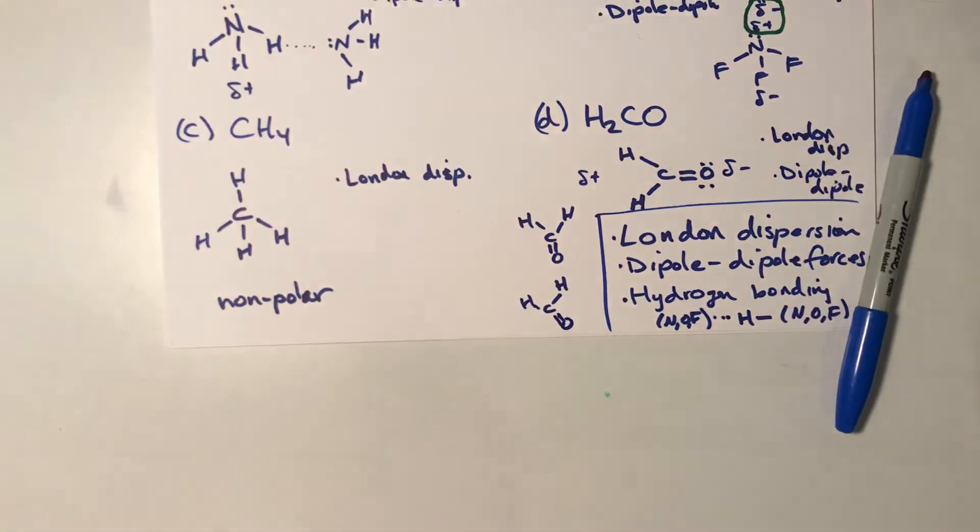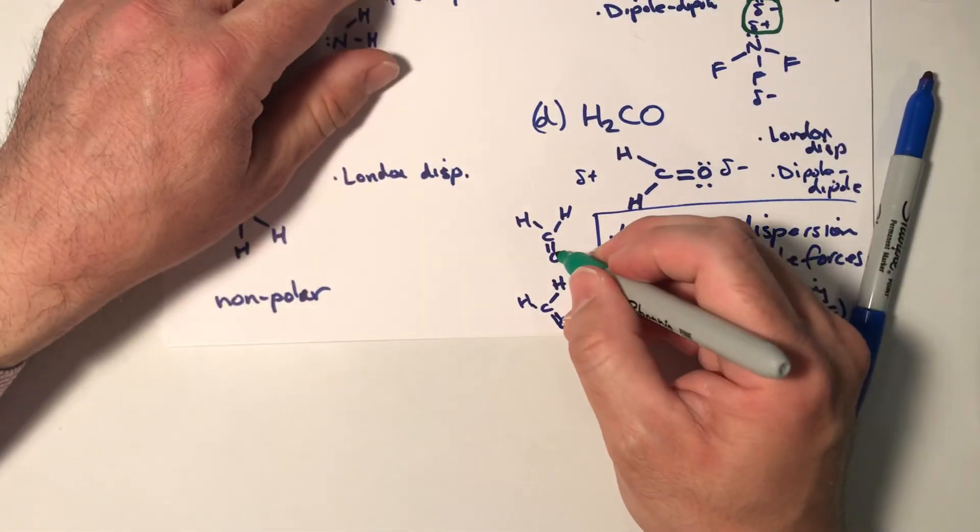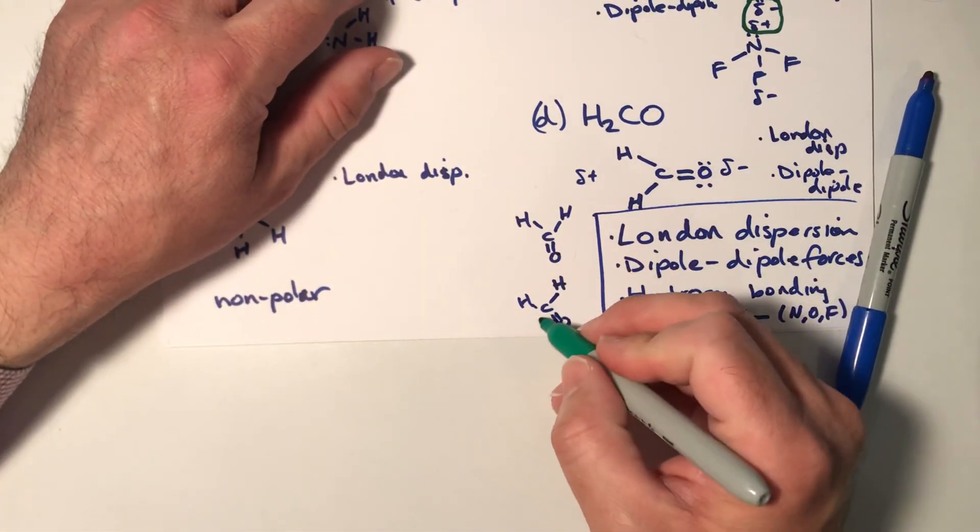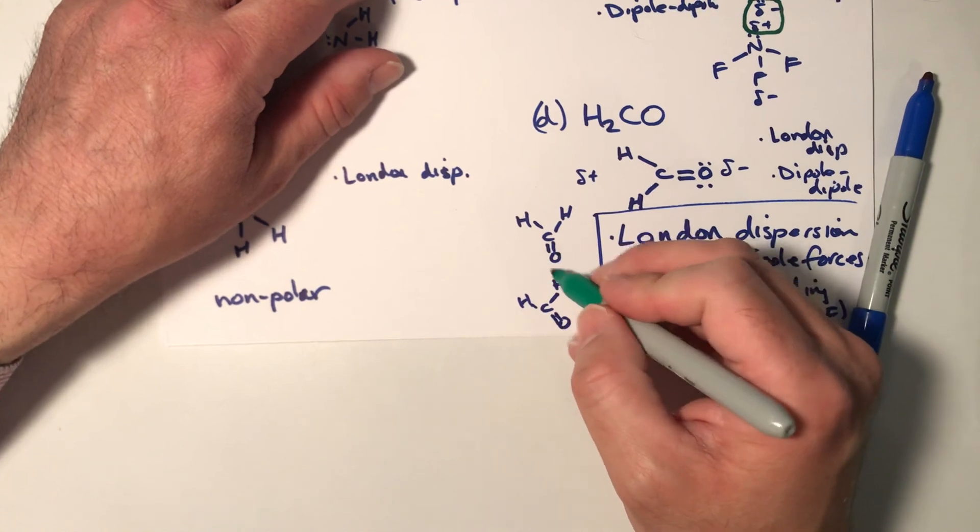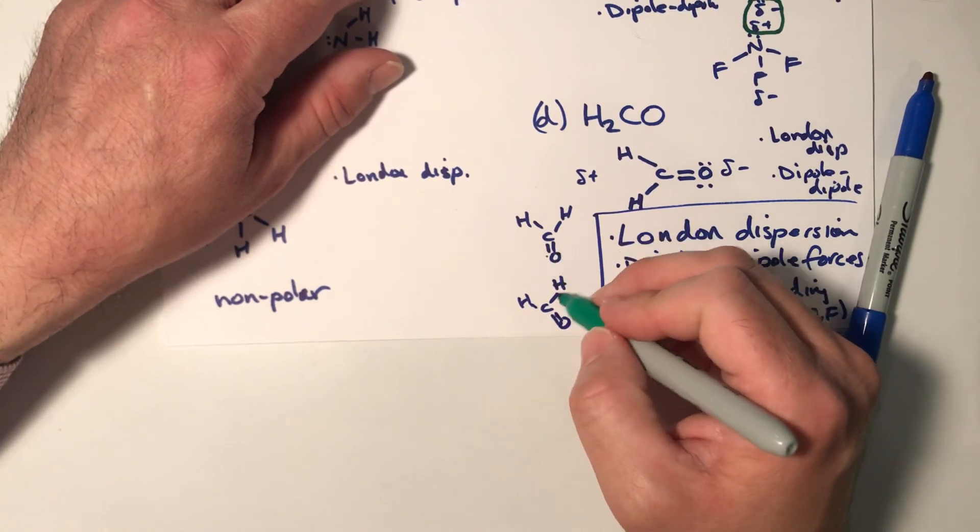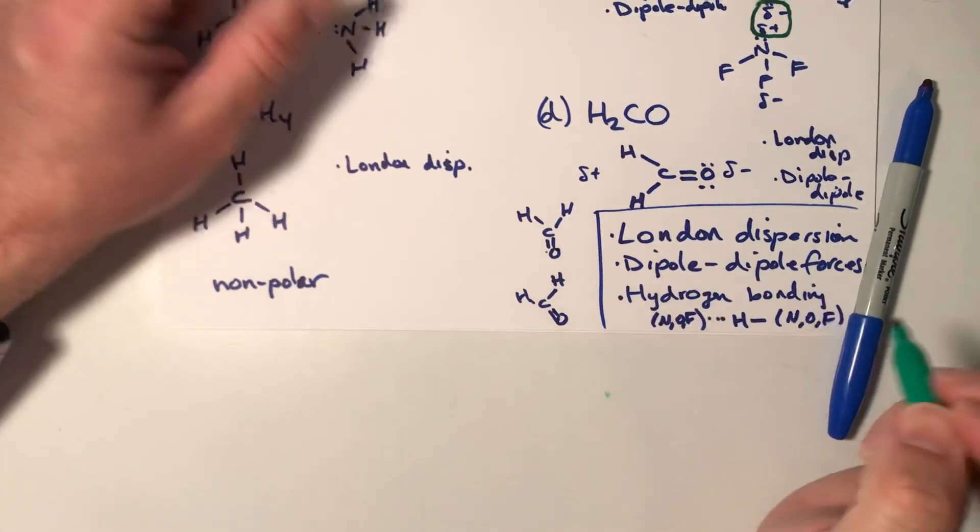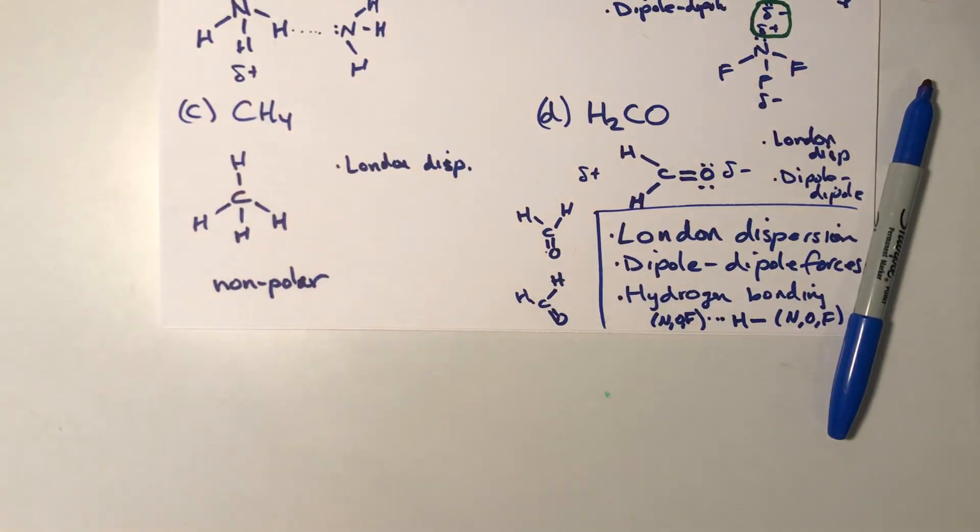So even if you draw neighboring molecules, notice here that you have an O and you have an H, but you have a C on this other side. So there's no way to get an O on both sides of the hydrogen in order to form the hydrogen bond. All right. I hope this problem has been helpful and I'm going to post some more soon.